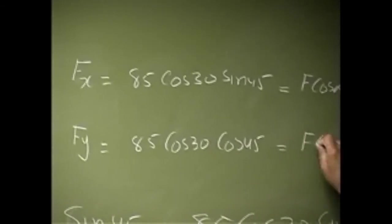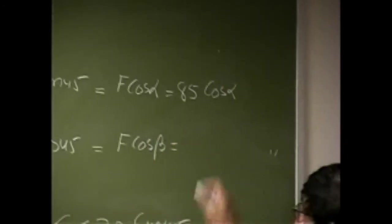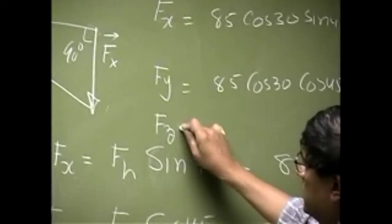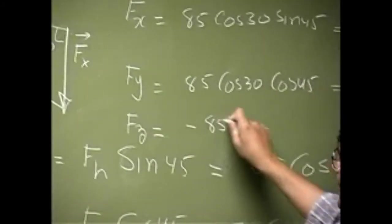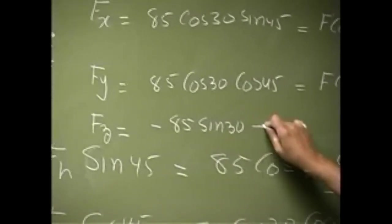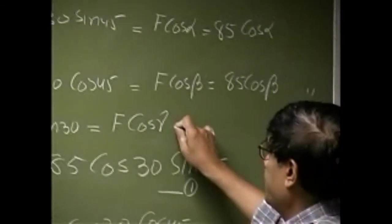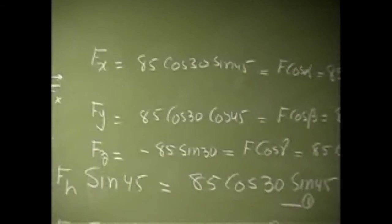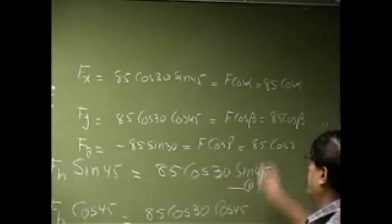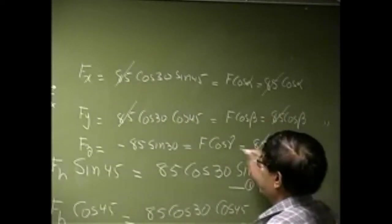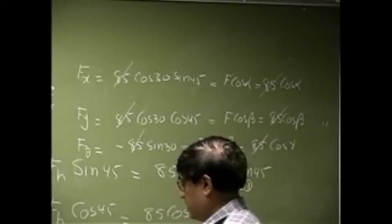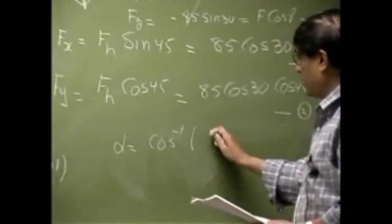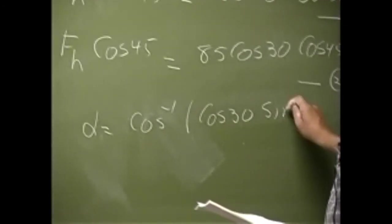This is also equal to F cosine alpha from case 1, which also equals 85 cosine alpha. Then Fy came out to be 85 cosine 30 cosine 45, and from the force equation it's going to be F cosine beta, which is 85 cosine beta. Finally, Fz equals negative 85 sine 30, which is equal to F cosine gamma, the same as 85 cosine gamma. So those are the three equations involving angles alpha, beta, and gamma, and 85 cancels from both sides.